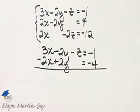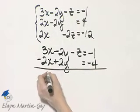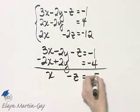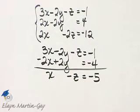Let's add those two equations. Three x minus two x is x, and then I have minus z is equal to negative five.